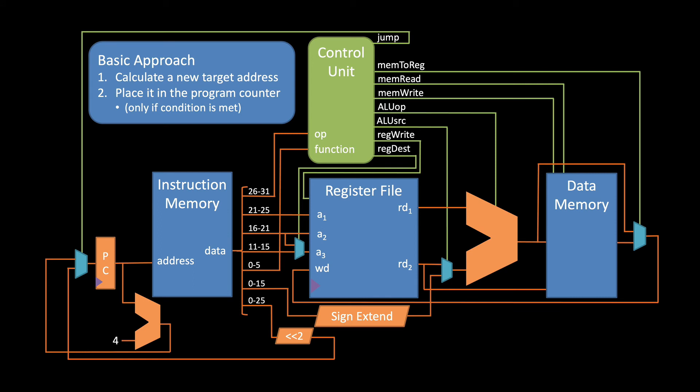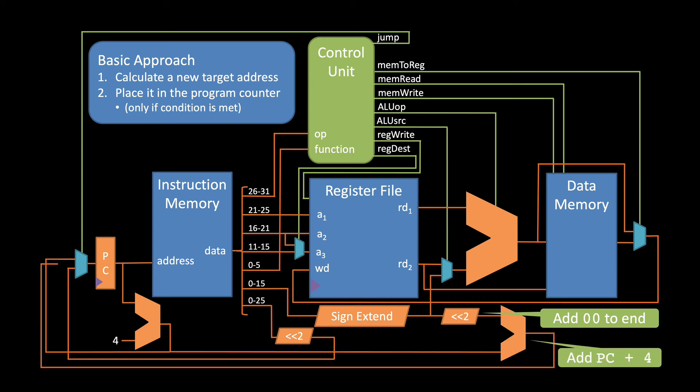To calculate the target address, we take the immediate value that contains the number of instructions away the target is, add back the two zeros that we left out, and then add this offset to the updated value of the program counter. And now we pass this value through a MUX so we can control whether or not we're taking the branch.